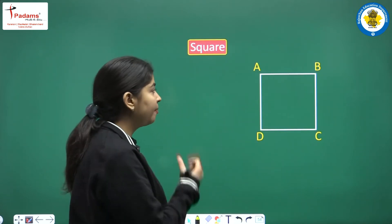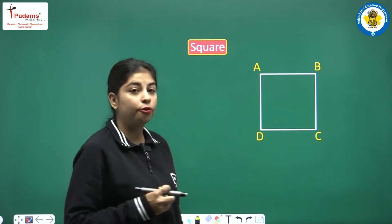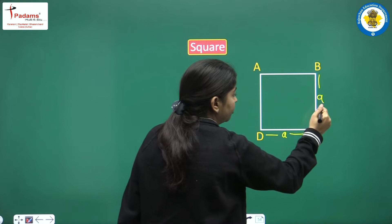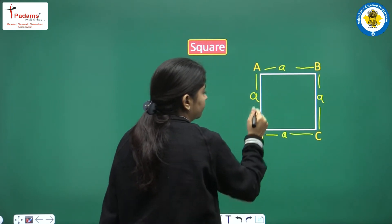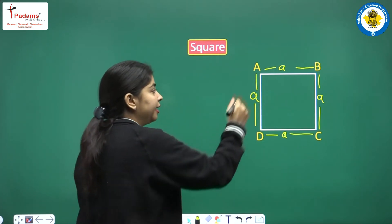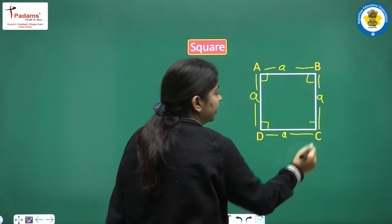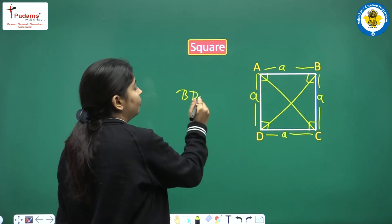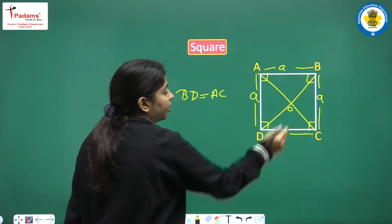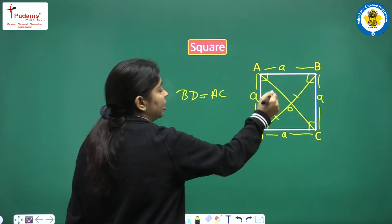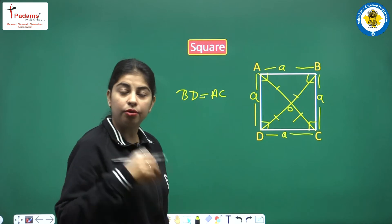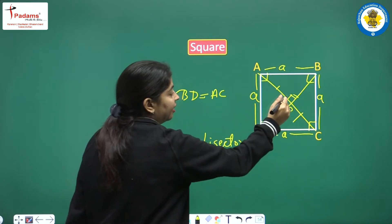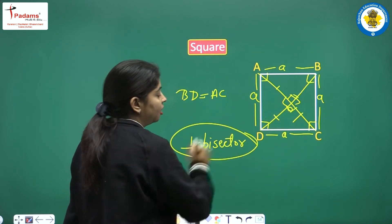Next shape is a square. A square is a four-sided closed figure in which all sides are equal — if one side is A units, then all four sides are A units. All angles are 90 degrees. The diagonals BD and AC are equal and they bisect each other. The square's diagonals are also perpendicular bisectors of each other.